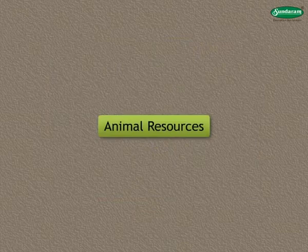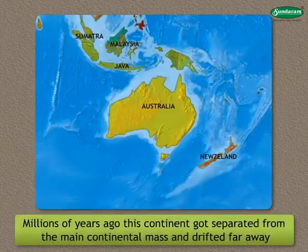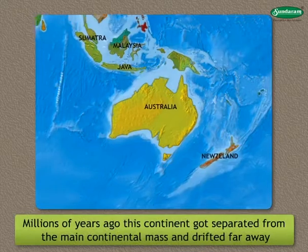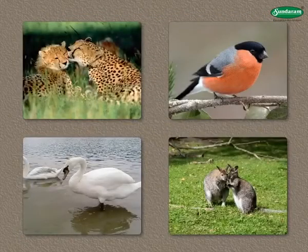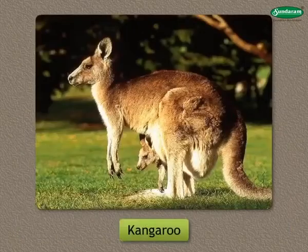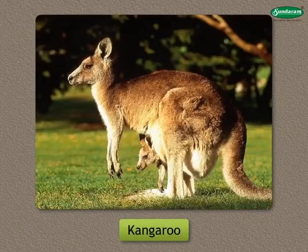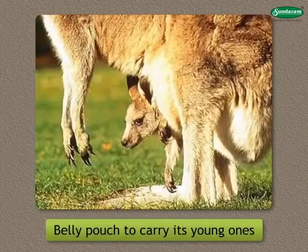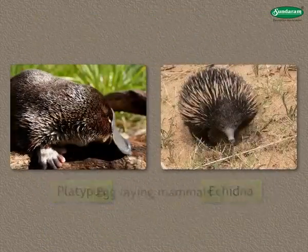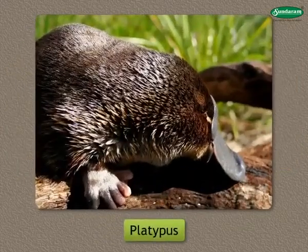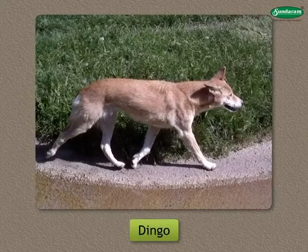Animal Resources: Millions of years ago, this continent got separated from the main continental mass and drifted far away. As a result, we find different kinds of animals in this continent. The kangaroo is a distinctive animal found only in this continent. It has a belly pouch to carry its young ones. It feeds on shrubs and grass. The platypus and echidna are egg-laying mammals. The platypus has a duck-like beak. Dingo, a kind of dog, is also found here.